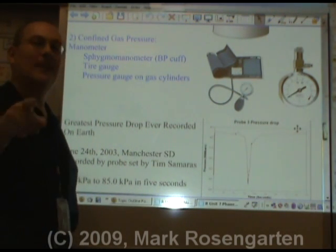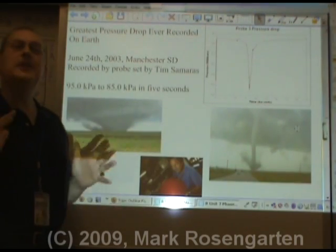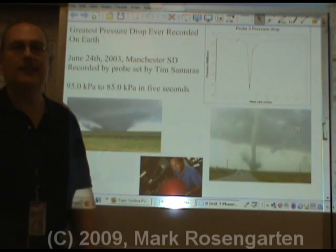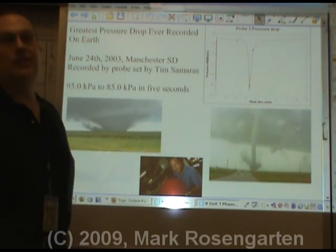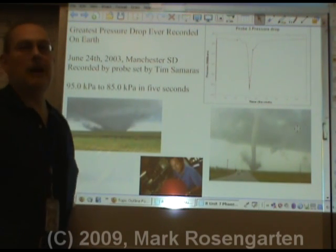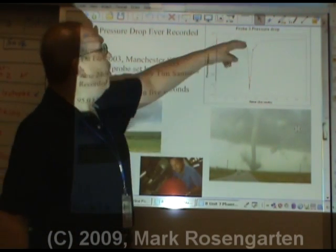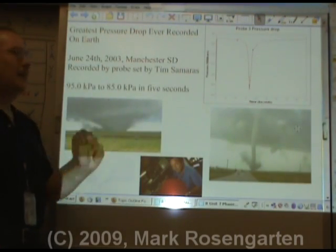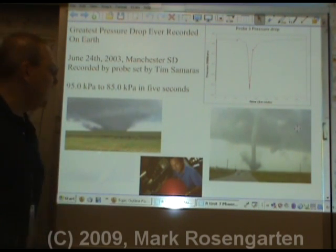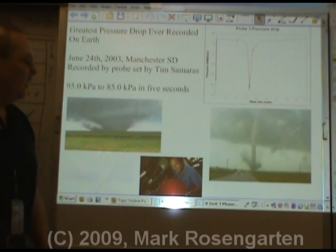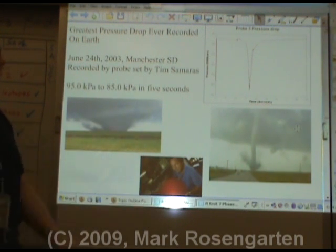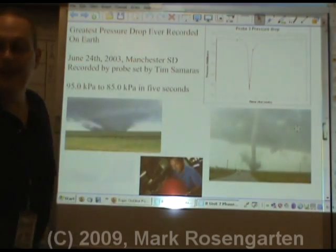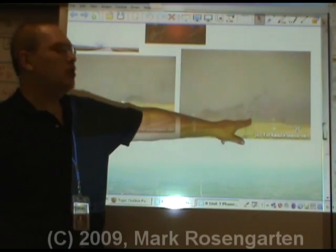The greatest pressure drop ever recorded was on June 24th, 2003, in what was once the town of Manchester, South Dakota. Storm chaser Tim Samaras put out a probe that recorded a 100-millibar drop — a 10-kilopascal drop — over just five seconds as an F4 tornado passed over it. Here's a picture of the probe, the tornado before it hit the town, and the tornado after it left.